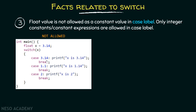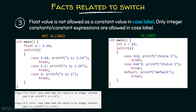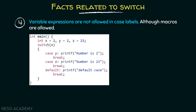Fact number three: float values are not allowed as constant values in case labels — only integer constants or integer constant expressions are allowed. For example, putting a float constant in a case label is not allowed and will produce the error 'case label does not reduce to an integer constant.' On the other hand, expressions like 4 * 5 + 3 which evaluate to an integer constant are allowed. Here, x is 23 and 4 * 5 + 3 is also 23, so this case gets evaluated correctly and 'choice 2' gets printed.